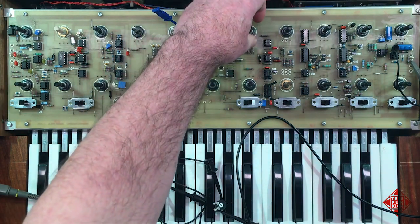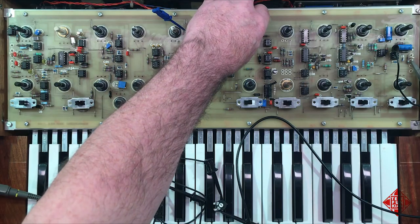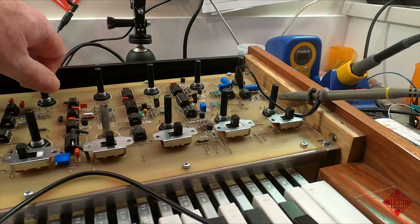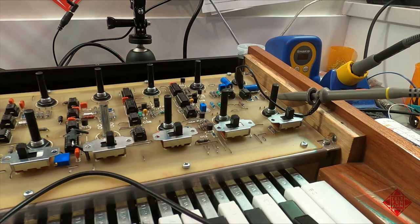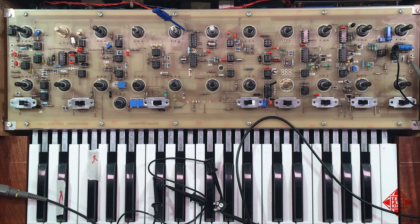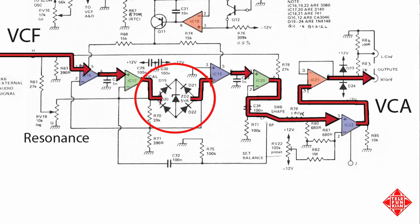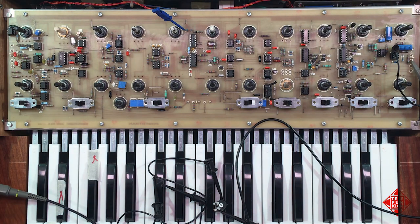Yet if we come over to the filter section of the instrument and allow it to self-oscillate, you can see the magnitude of that signal — which is substantially greater than that of the actual oscillators. We've got about 5.6 volts peak-to-peak, which is exactly what we might expect, because we have a Zener diode in the filter section which is limiting the output. So the output of the filter self-oscillation is approximately 10 times greater than the output of the actual oscillators themselves.